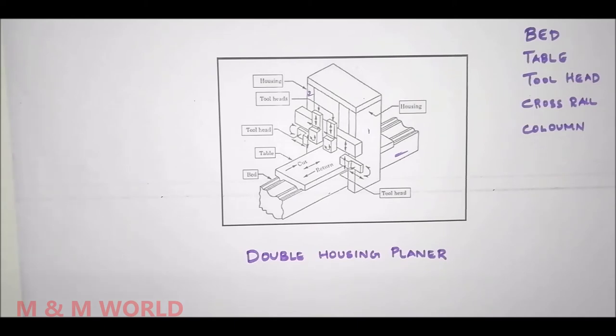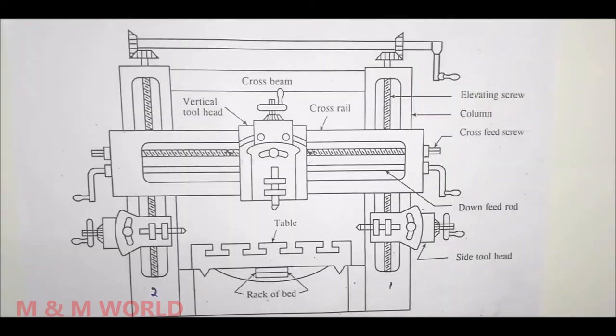In case of a standard planer we have only one table, but in a divided table planer there are two separate tables mounted upon the bed guideways, and the tables may be reciprocated individually or together. Now the next part is the housing or column or upright.